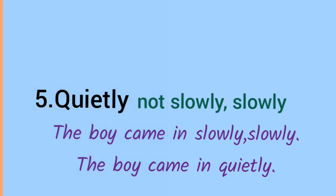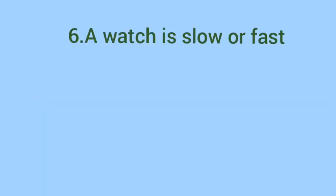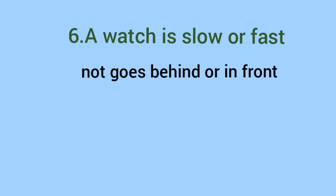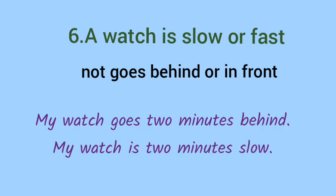Number 6: a watch is slow or fast — not 'goes behind' or 'in front.' When you want to say your watch is ahead or behind, look at these sentences: 'My watch goes 2 minutes behind' is wrong. 'My watch is 2 minutes slow' is correct. In both sentences, the second sentence is correct.